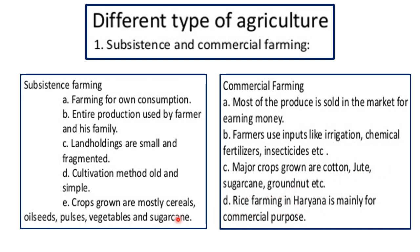For example, in Eastern India — Bihar, West Bengal, Odisha, Assam — rice is a food crop and falls under subsistence farming. But the same product, rice, in Punjab and Haryana, meaning in western India, is a commercial crop grown for commercial purpose.